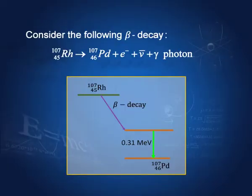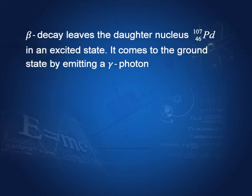For example, rhodium-107 emits a beta particle — this is called beta decay — and leaves the daughter nucleus palladium in an excited state. The daughter nucleus then goes down to the ground state by emitting a gamma ray of energy 0.31 MeV. Beta decay leaves the daughter nucleus in an excited state, which then comes down to the ground state by emitting a gamma photon.